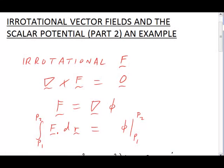Recall that in Part 1 we discussed what it means for a vector field F to be irrotational. It means that the curl of F is 0. That in turn tells us that F can be written as the gradient of a function phi, known as the potential for F.